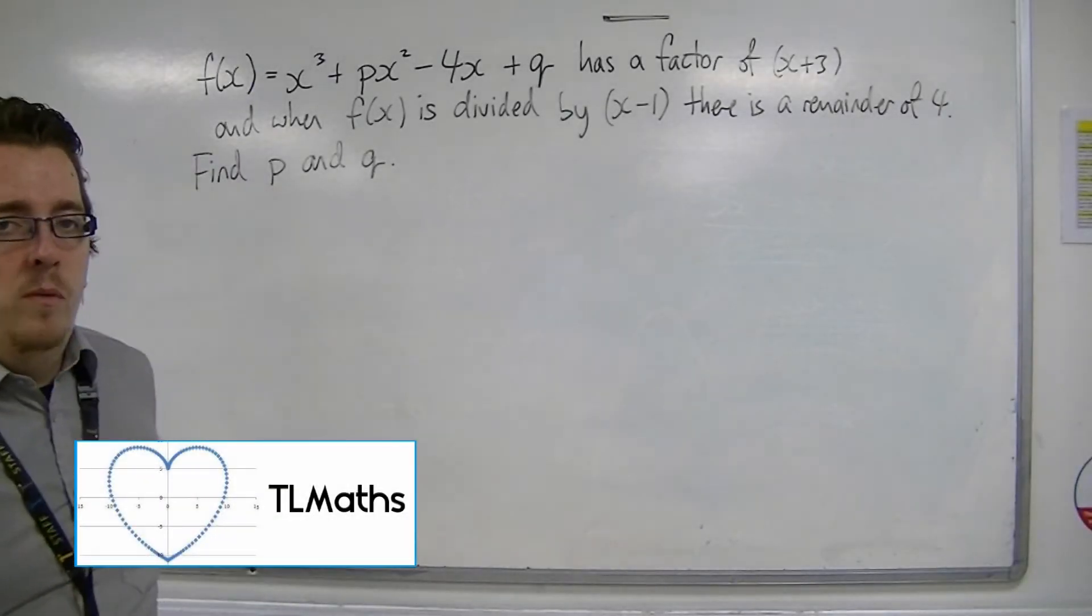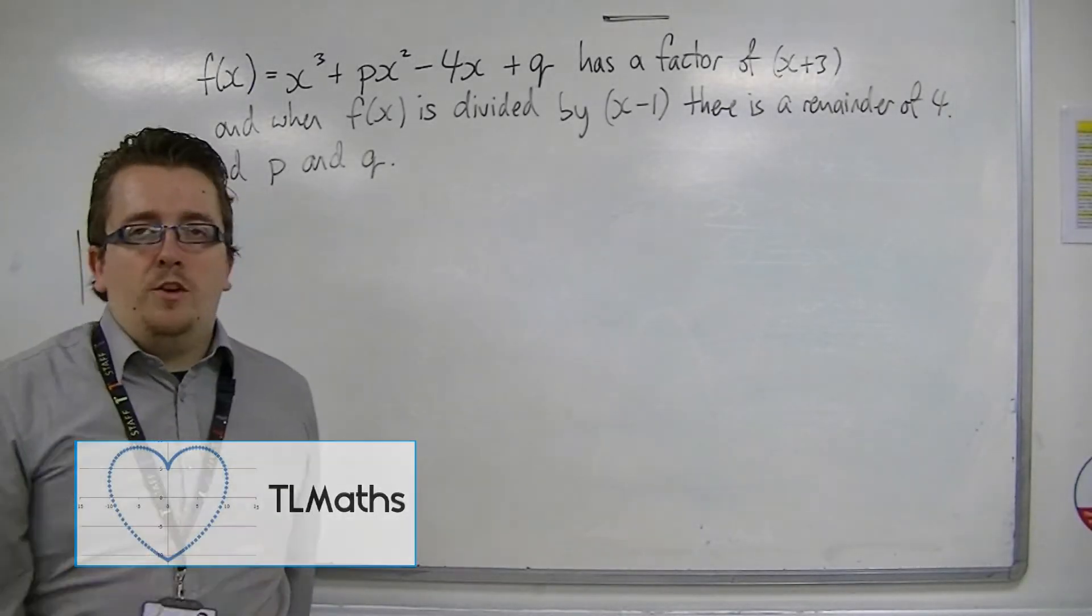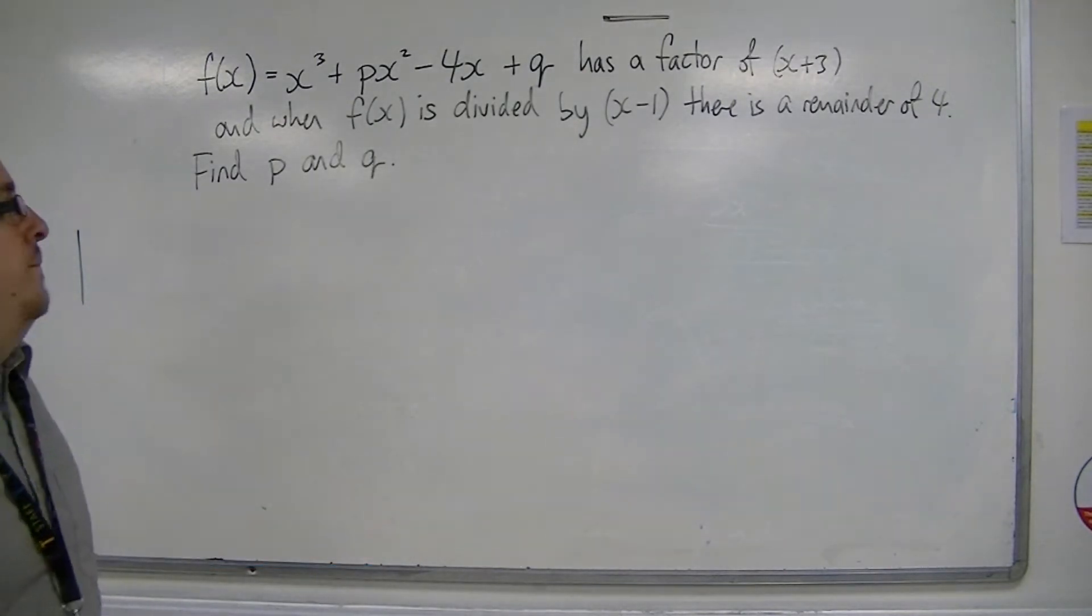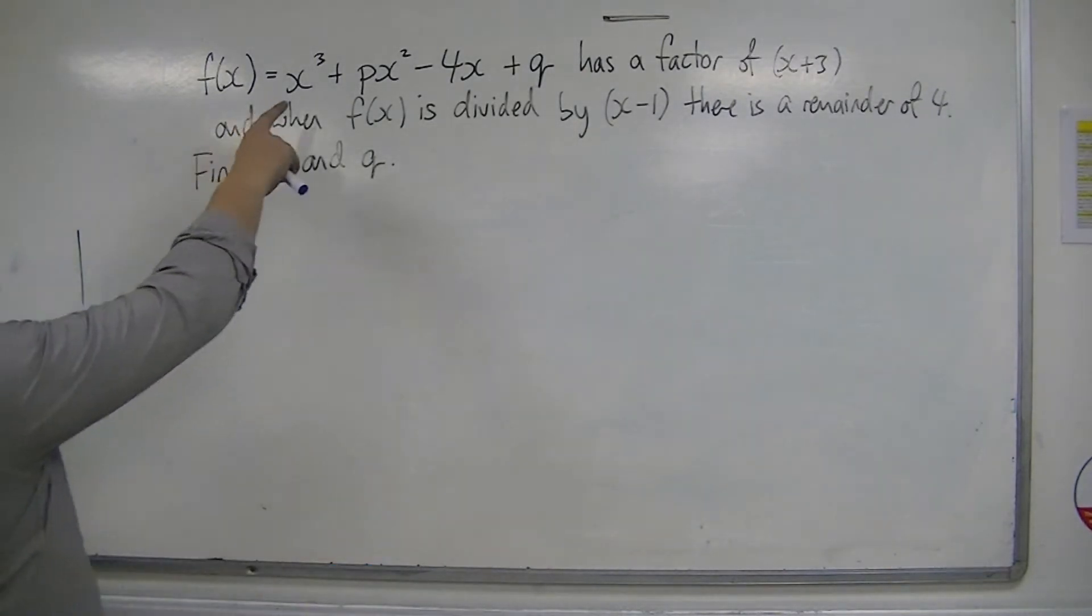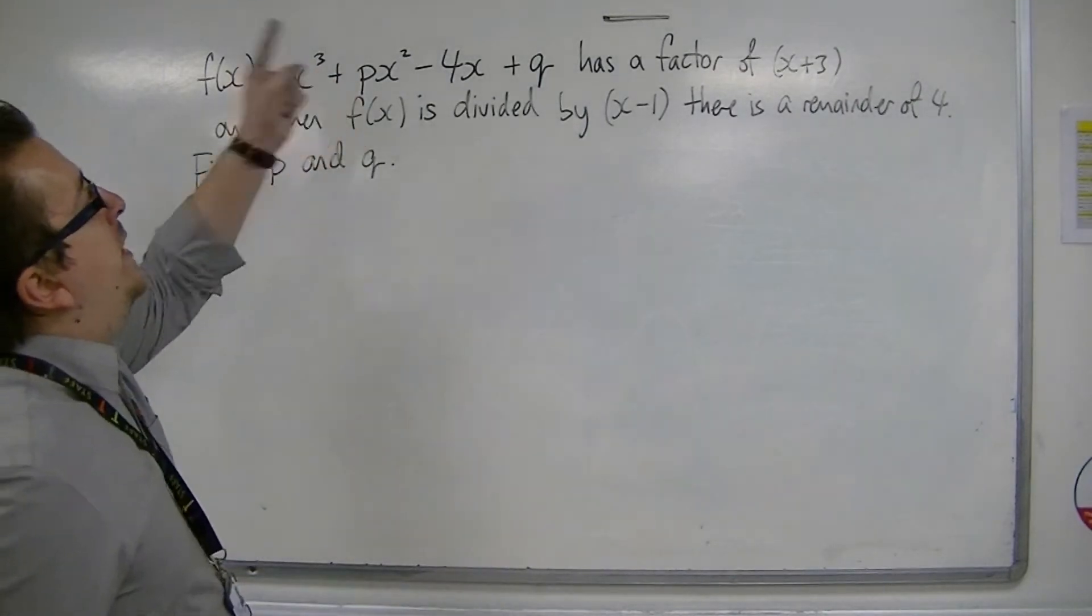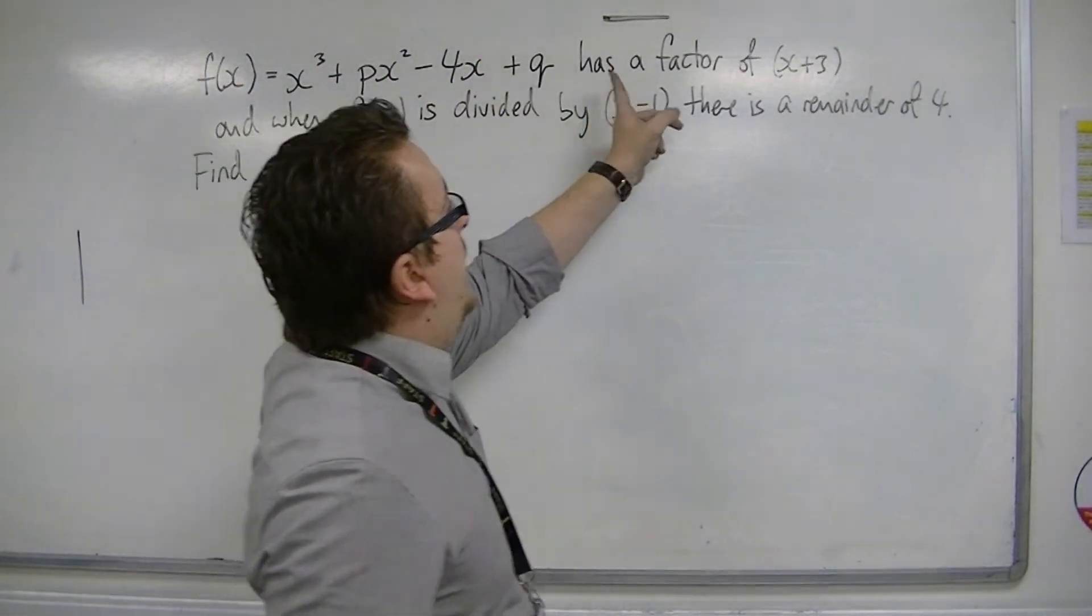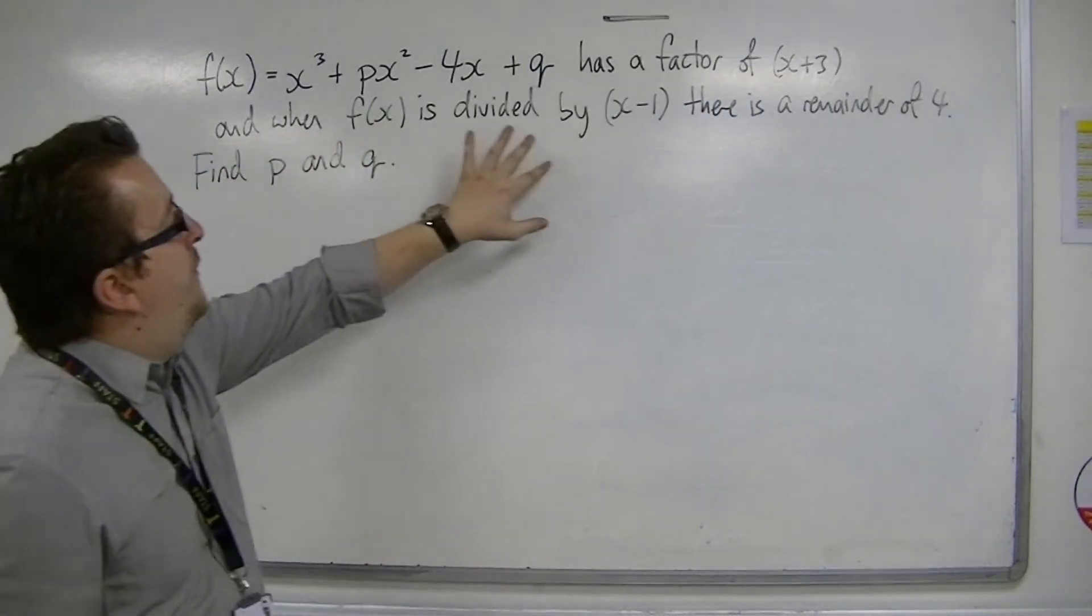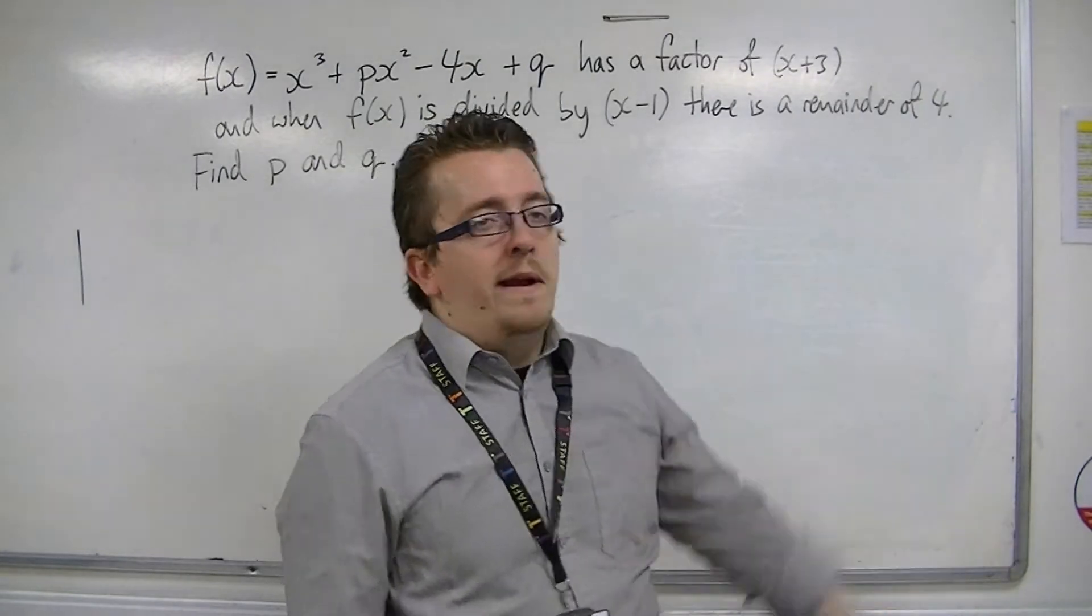Okay, in this video we're going to have a look at a problem that involves cubic equations, and we're going to be using the factor theorem and remainder theorem to solve it. f(x) is equal to x cubed plus px squared minus 4x plus q, and has a factor of x plus 3, and when it is divided by x minus 1, there is a remainder of 4.